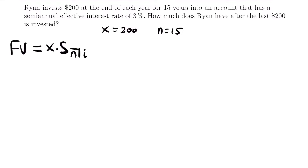The account has a semi-annual effective interest rate of 3%. That's not a yearly rate, so J equals 0.03 — that's 3% in decimal form — but this is not a yearly rate. This is a semi-annual effective interest rate, and so we cannot use this rate in the future value of an annuity notation. We need to get an annual interest rate because we are making payments every year, not every semi-annual period. Ryan is investing $200 at the end of each year, so the period is one year. When we use this notation, the frequency of N must equal the frequency that our interest rate is compounded for — and right now that's not true. We have 15 years but a semi-annual interest rate, so we need to convert this interest rate to an annual rate first.